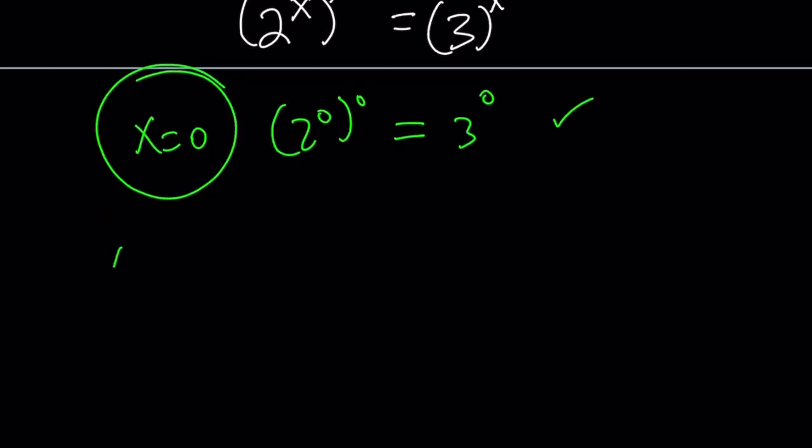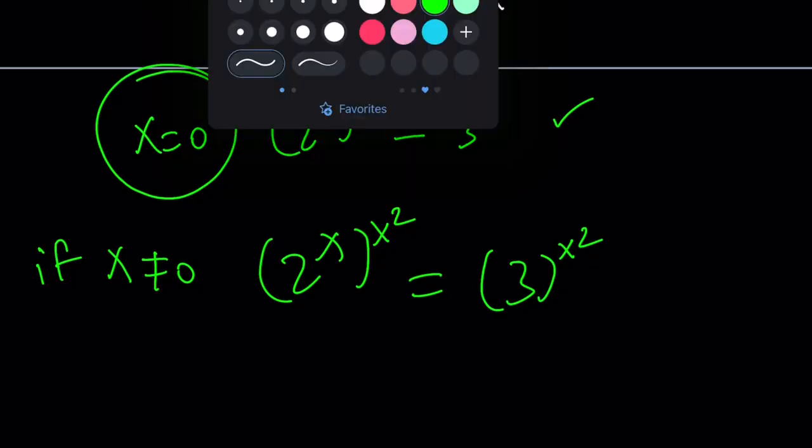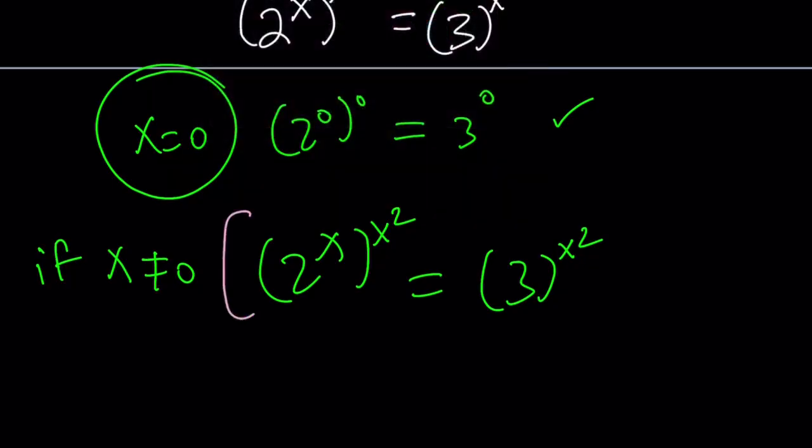Now, what if x does not equal 0? Then in that case, from here, I can basically get rid of the x squared. So raising both sides to the power 1 over x squared does that exactly, or you can just cancel it out, depending on how rigorous you want to be.